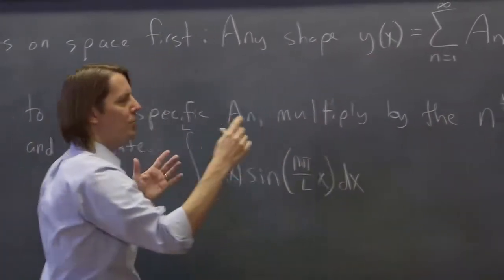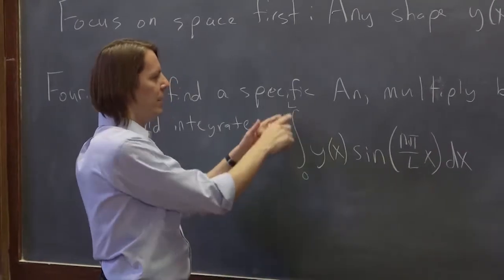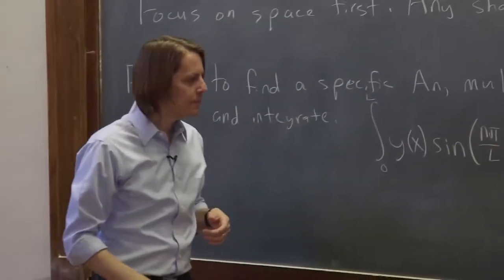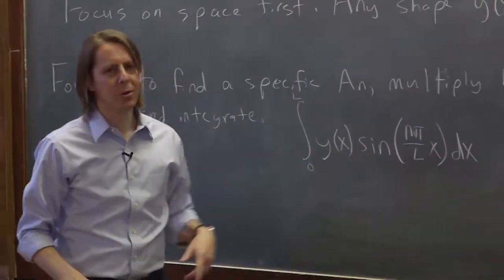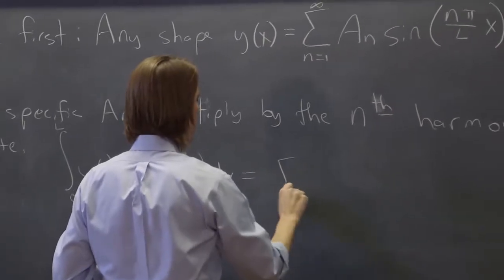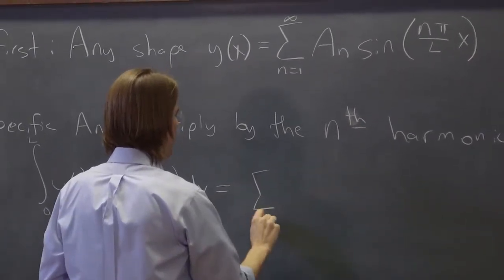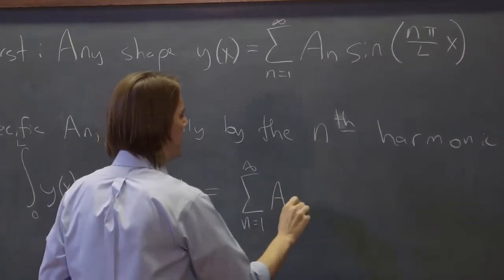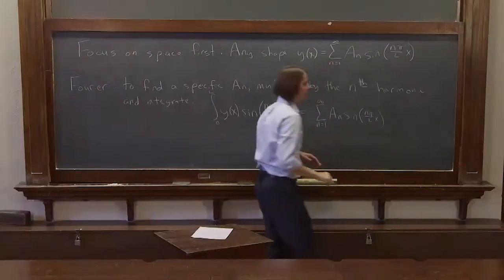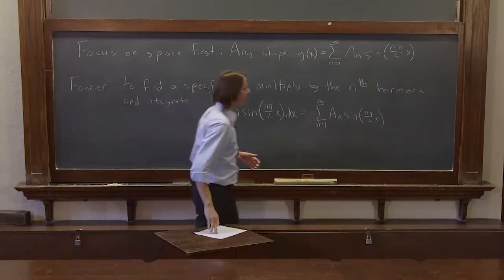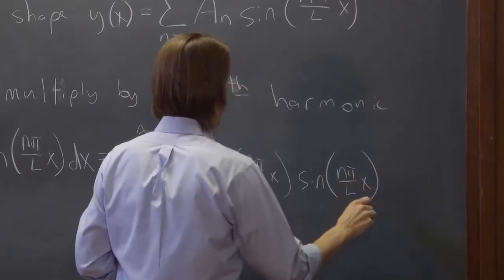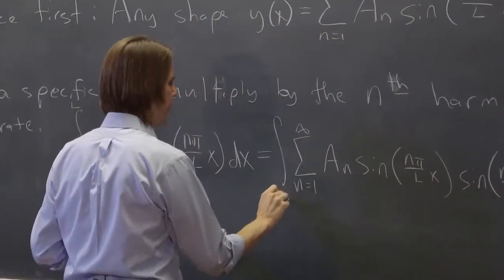So that's what multiply by the nth harmonic and integrate means. We're describing this y of x, but we're really describing y of x as the shape of a string that's bound at 0 and l. So these are the limits or the boundaries of the domain on which you're describing the shape of that function. That's why it shows up here as well in the harmonic. So if we do that to the left, we also do it to the right. So this side, n equals 1 to infinity A_n. And this is sine n pi over l x. And now we multiply it by the nth harmonic, sine n pi over l x.